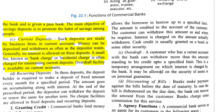Overdraft facility is available on the current account. If I have a current account and I withdraw more money than what is actually present in my account, the bank gives me an overdraft — that is, an instant loan. The bank does not allow my check to bounce, but when money is deposited next time, the bank will deduct the overdraft amount plus interest.